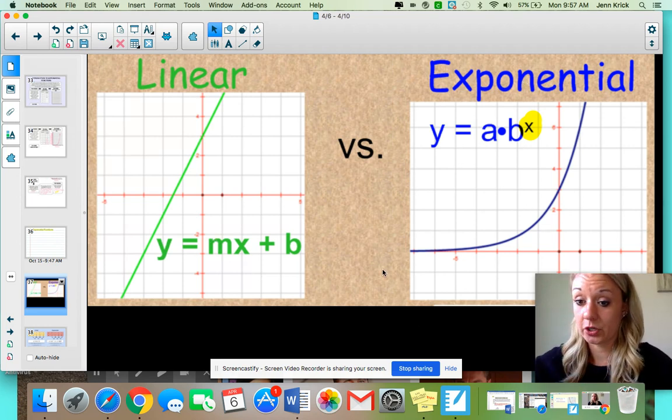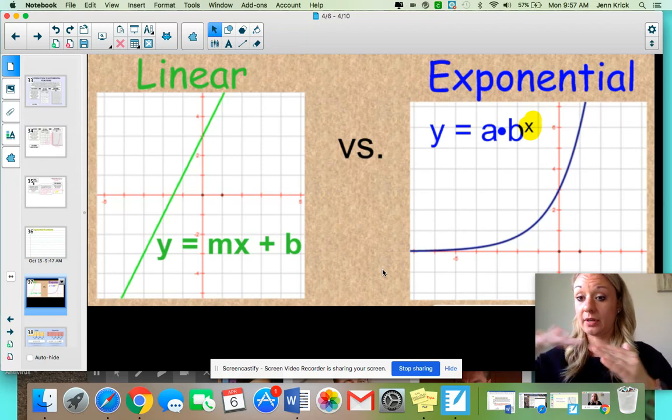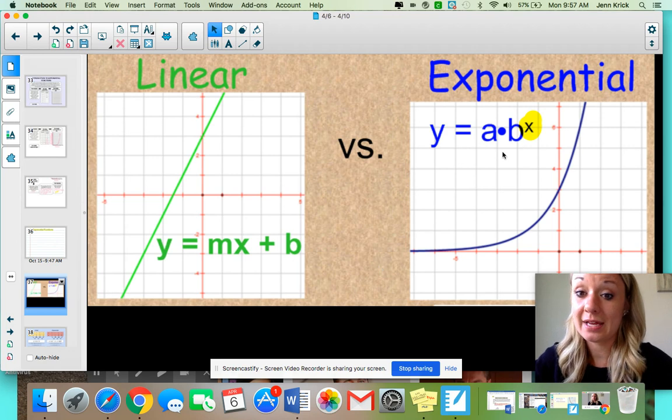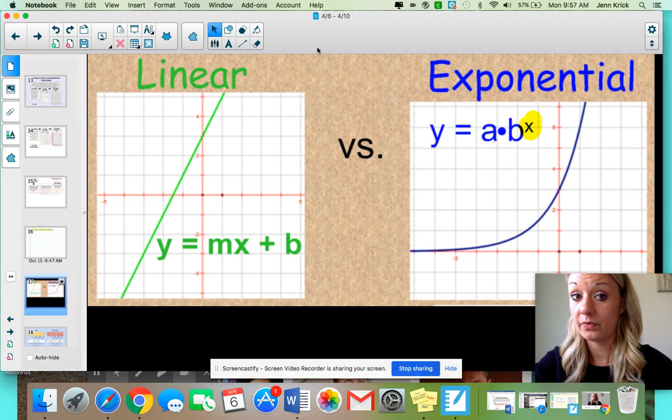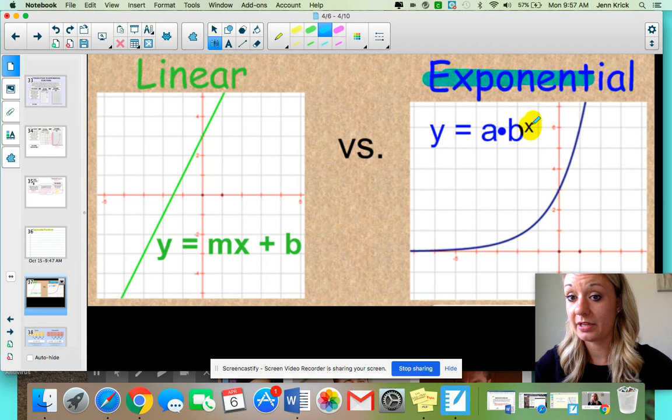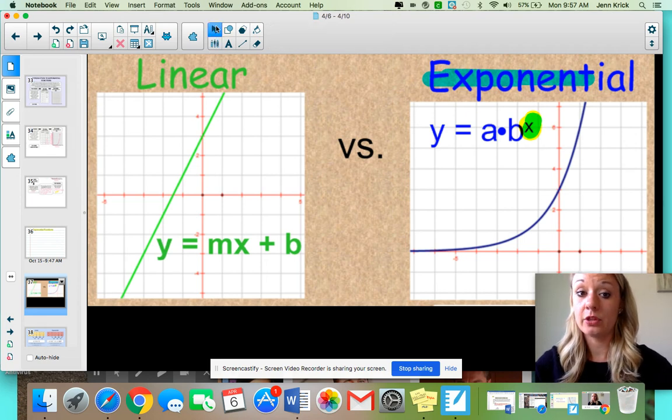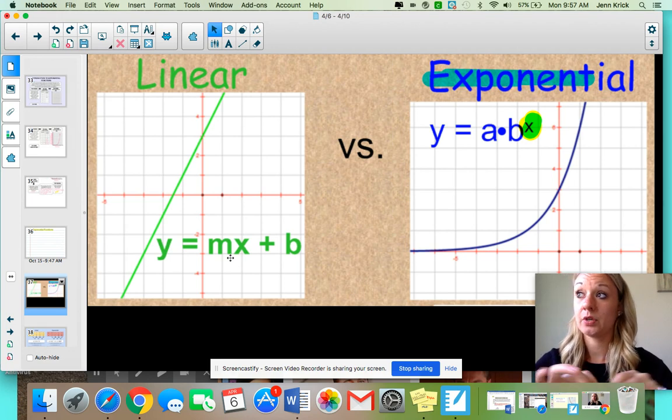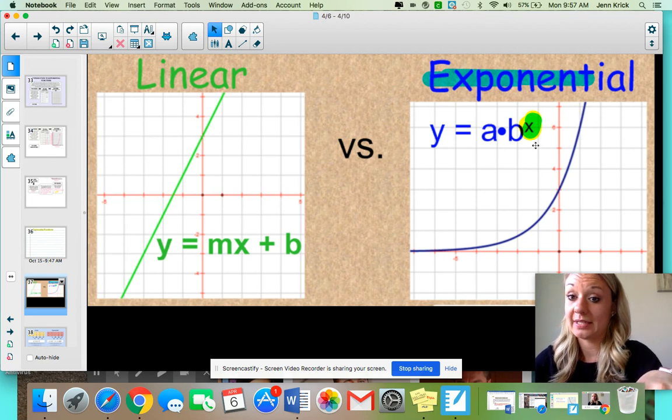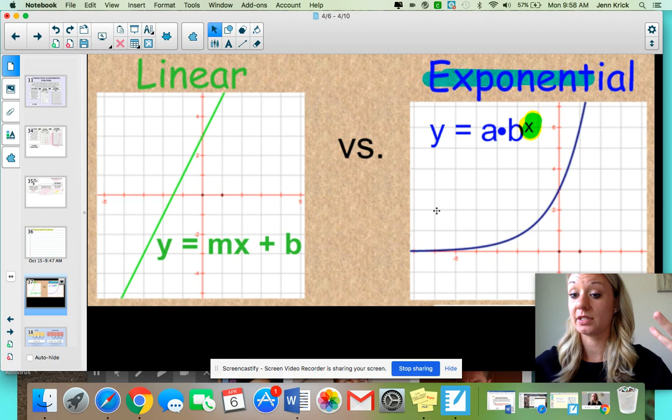Exponential graphs have a curve to them, because they're either increasing or they're decreasing by a very crazy amount. And your equations, you'll see an exponent. Notice exponential. Do you kind of see the word exponent in there? And then here's your exponent. So those are two ways to kind of see, all right, if your equation is in slope intercept form, obviously that's going to create a straight line that has to be a linear function.